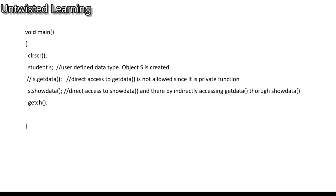Then in void main, 'student s' is created. If you write s.get_data, it will not be called because get data is declared private. So you need to only access the show data function — that is direct access to show data, which indirectly accesses get data through show data. In this way you can access it indirectly.